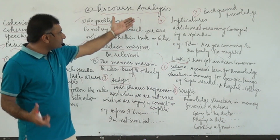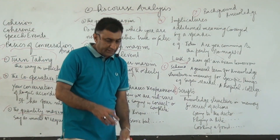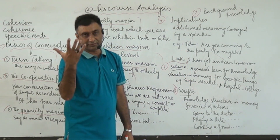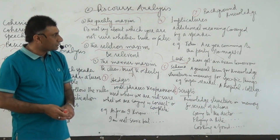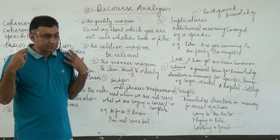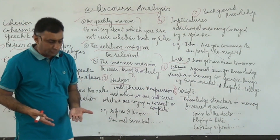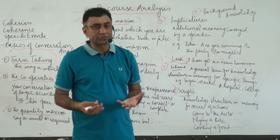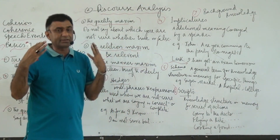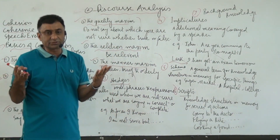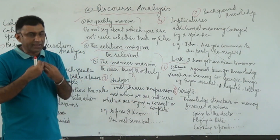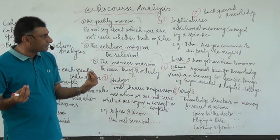The last concept in conversation analysis is background knowledge. Background knowledge means that when we talk to any person, we assume beforehand that this person must be aware of certain things. When we face various situations, we use our background knowledge to understand the real situation. This knowledge comes from our awareness of situations, people, circumstances, and systems. Background knowledge helps us understand the meanings of a conversation.